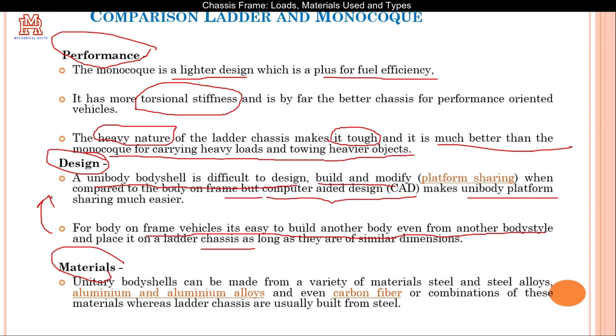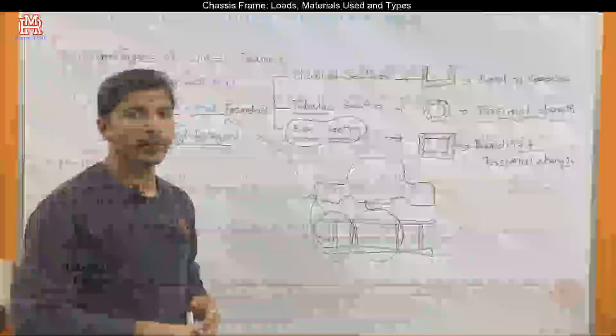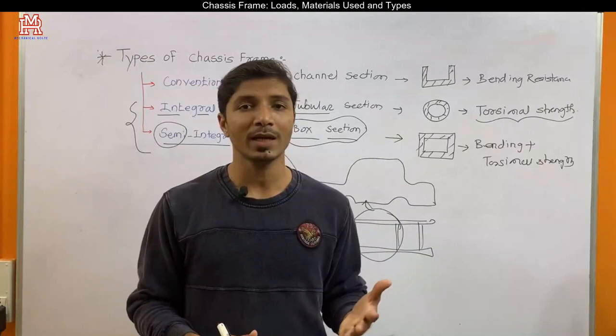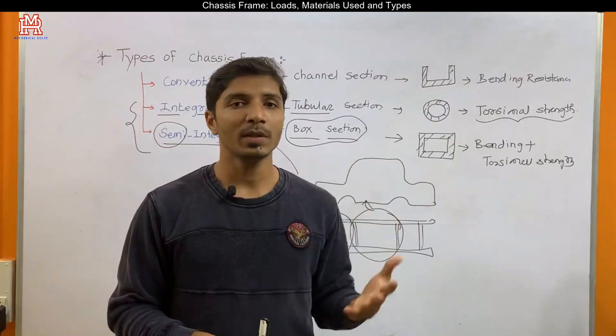Monocoque chassis can only be used for a single model. In terms of materials, monocoque can be made from a variety of materials — steel and steel alloys, aluminium and aluminium alloys, carbon fibre, or a combination. Whereas ladder type chassis are usually built from steel only. I hope you liked this information. If you have any questions regarding chassis frames — the types, functions, materials, etc. — please write in the comment box and I will try to answer. See you in the next video.